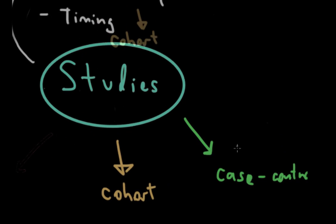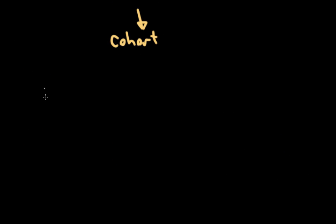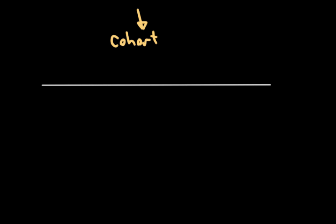The first one we're going to be looking at is the cohort study. In a cohort study, we're going to start with a population of disease-free individuals and follow them over time to find out the risk of a specific outcome occurring. We start with people who either have or don't have an exposure, and track them over time to see whether or not they develop a disease.